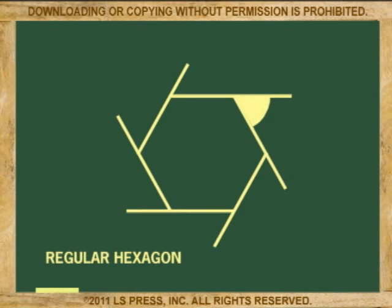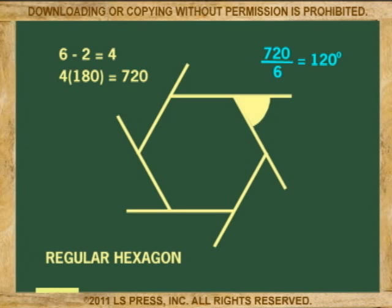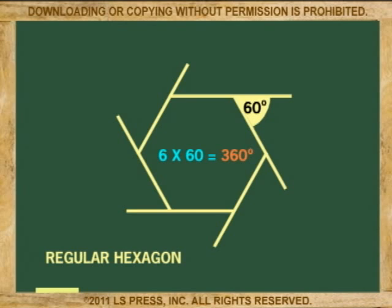Let's try a hexagon. Applying the equation: 6 minus 2 equals 4. 4 times 180 equals 720, which is the sum of the interior angles. 720 divided by 6 gives 120. Now to find the exterior angle: 180 minus 120 is 60. To find the sum of the exterior angles, multiply 6 times 60, which equals 360 degrees.